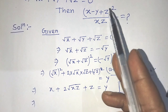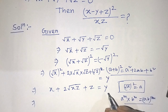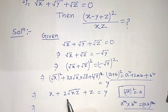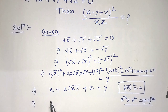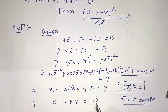To find the value of this algebraic expression, we have to transpose y from the right hand side to the left hand side, and at the same time transpose 2 root of xz from the left hand side to the right hand side. So we can write: x minus y plus z is equal to minus 2 root of xz.